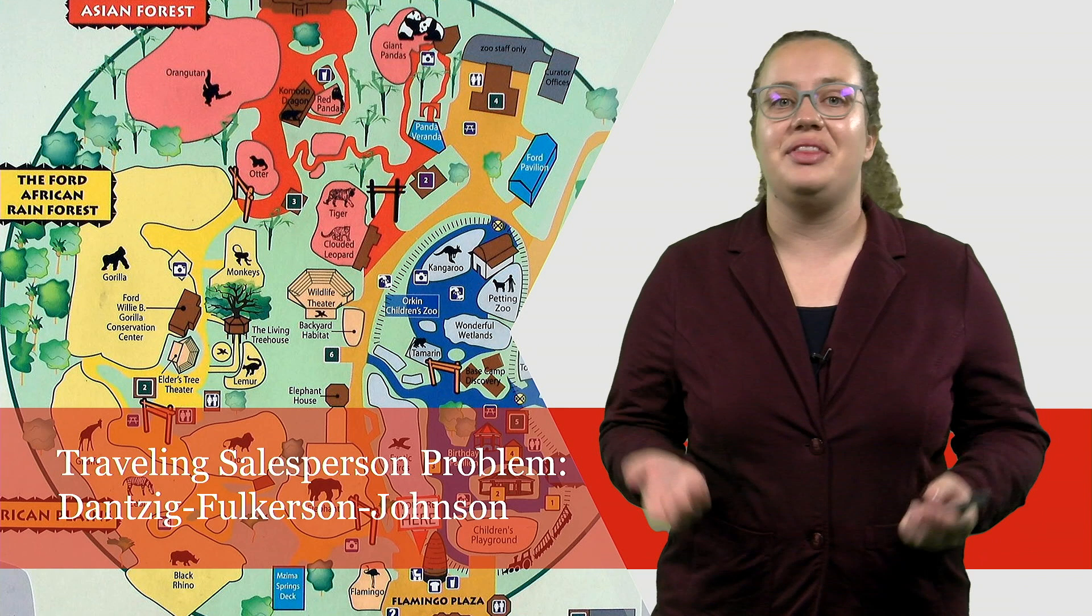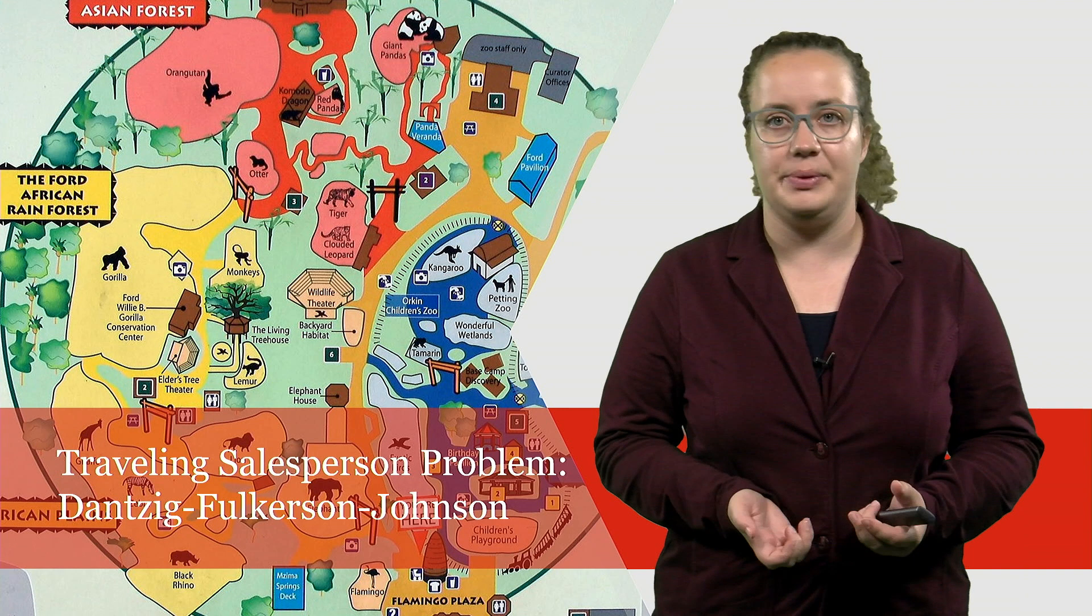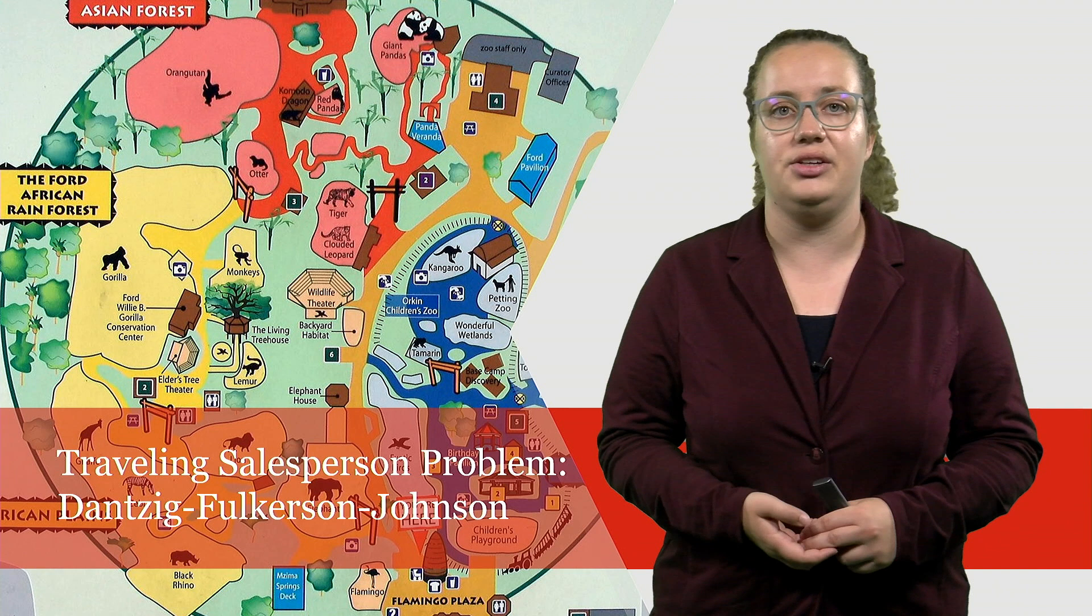Welcome to this web lecture on the Danzig-Folkerson-Johnson formulation of the travelling salesperson problem. Previously, we were looking into the TSP using other formulations, for example the Miller-Tucker-Zemlin formulation, but this formulation is sometimes not ideal, which means that we're looking into alternative formulations to understand when one formulation is better than another.